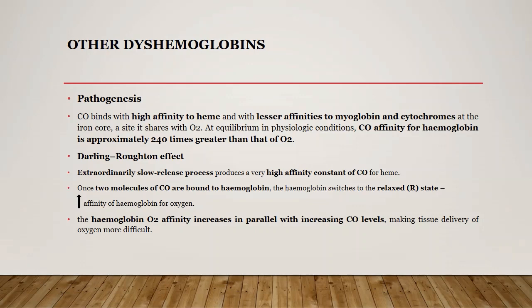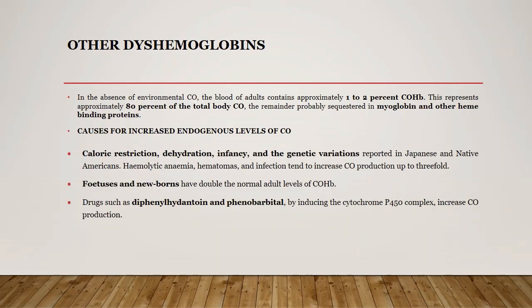This phenomenon gives rise to the Darling-Rotten effect. Due to increased affinity, there is an extraordinarily slow release process. Once two molecules of carbon monoxide have bound with hemoglobin, it switches to a relaxed state, increasing the affinity of hemoglobin for oxygen — so oxygen binds irreversibly and oxygen delivery to tissues is reduced, worsening with increased carbon monoxide levels. Other causes for increased endogenous carbon monoxide include caloric restriction, dehydration, infancy, and genetic variations. Fetuses and newborns have carboxyhemoglobin levels double the normal adult level of around 1 to 2 percent. Drugs such as diphenylhydantoin and phenobarbital, by inducing the cytochrome P450 complex, increase endogenous carbon monoxide.